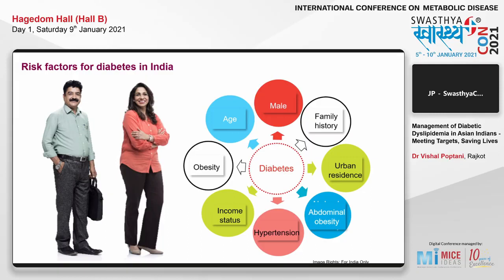What are the risk factors for diabetes in India? The Indian phenotype definitely differs. Risk factors include age, gender, family history, urbanization occurring in society, abdominal obesity, hypertension, and socio-economic strata — which together create a diversified picture regarding diabetes. Most importantly, obesity is something in the Indian subset that is killing people.